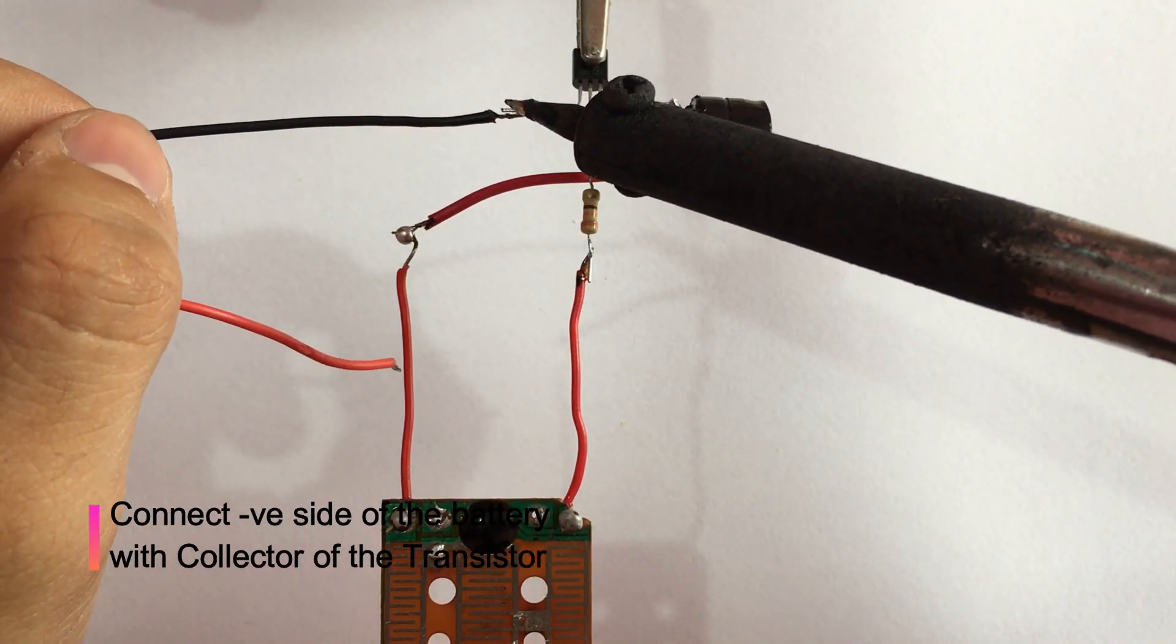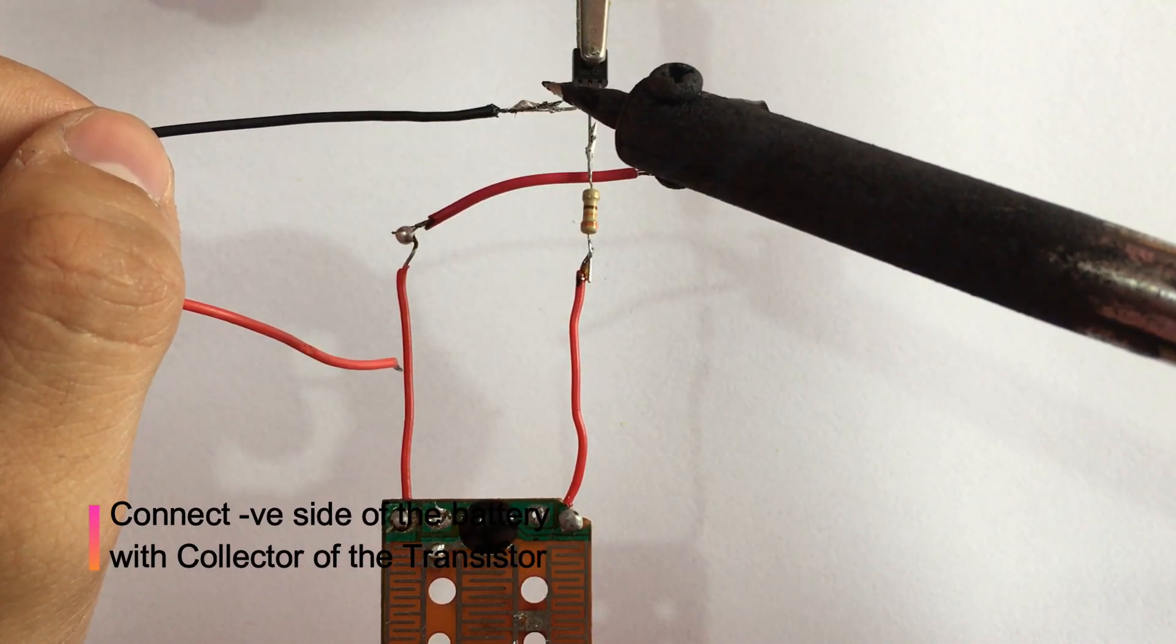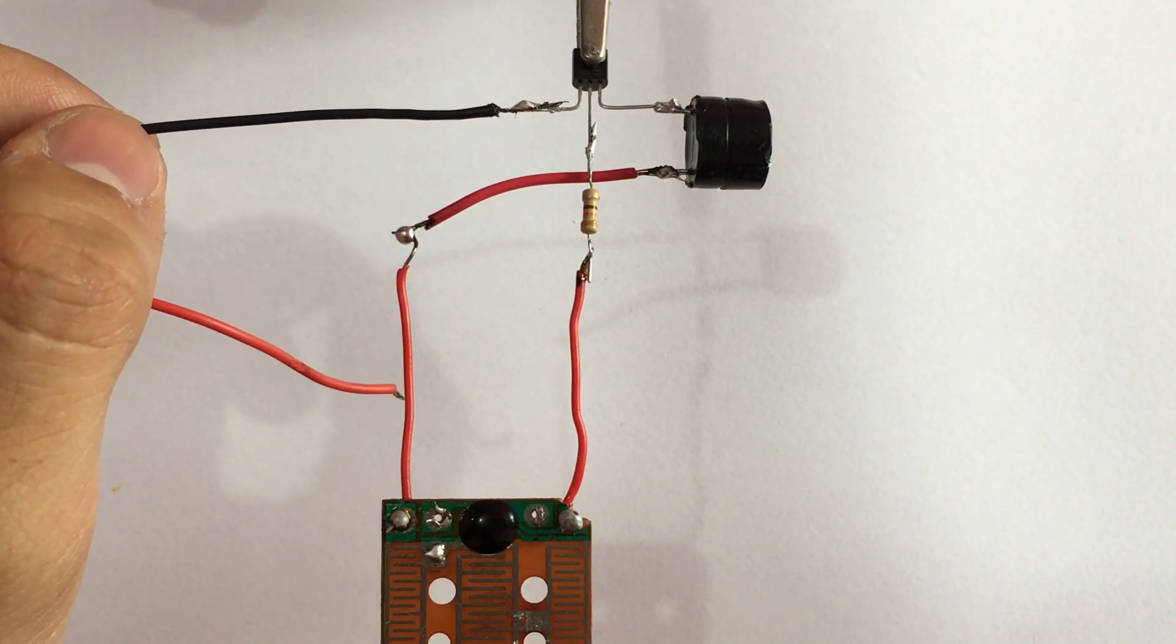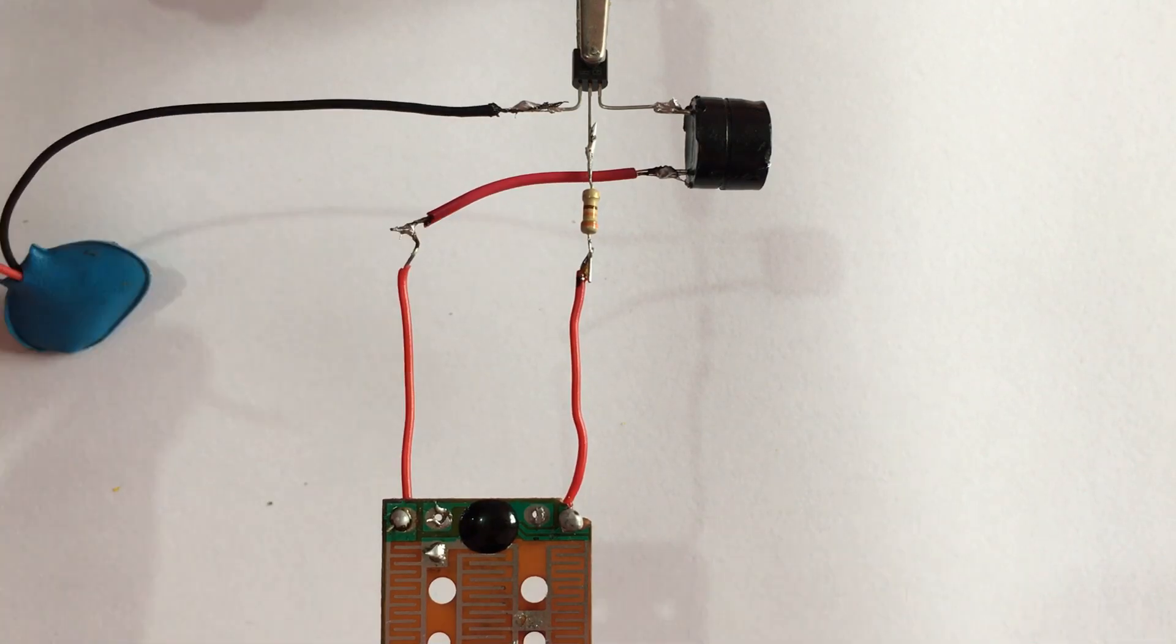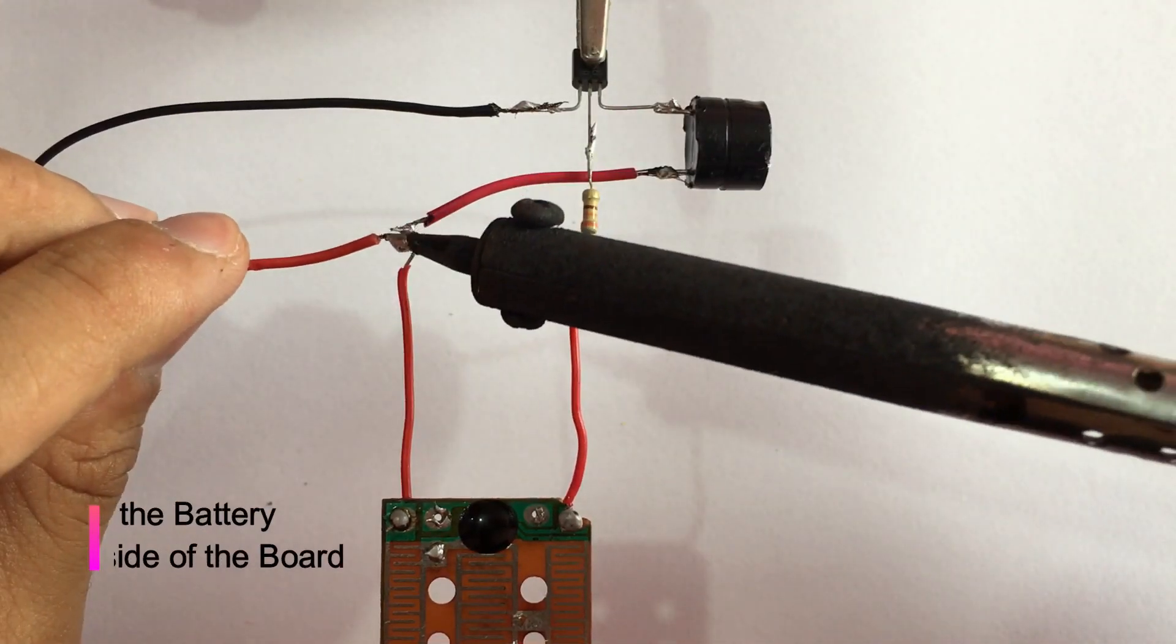Connect the negative side of the battery with the collector of the transistor and the positive side of the battery with the board.